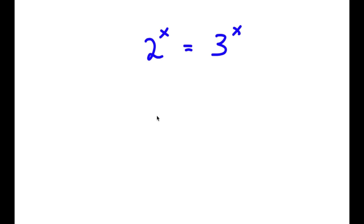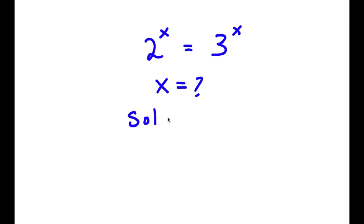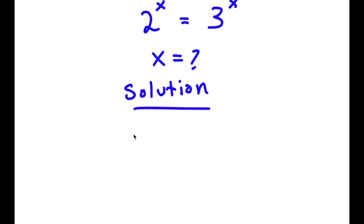In this problem, I have 2 to the power of x is equal to 3 to the power of x. I want to find the value of x. For my solution, I'm going to first start by writing 2 to the power of x is equal to 3 to the power of x.